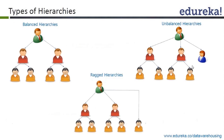In the balanced hierarchy diagram, there is one parent at the top, then two children, and each of those children has two other children at the next level. So every parent has two children from top to bottom — this is called a balanced hierarchy.